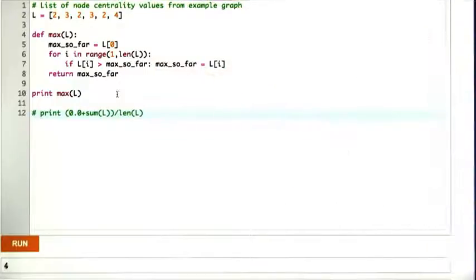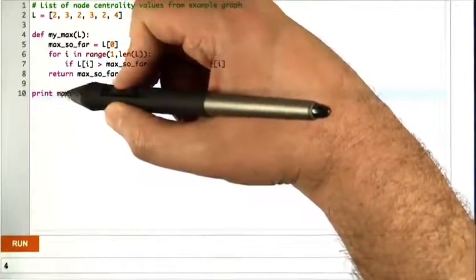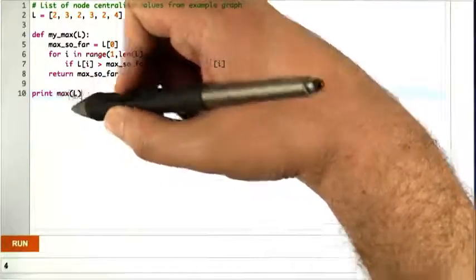Now, perhaps not surprisingly, you don't want to do this in Python. You don't want to write your own max routine because Python already has one. But just as before, you have to be really careful. When you use things like max in your programs, keep in mind that this is a linear time operation. It's not constant time.